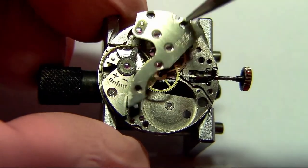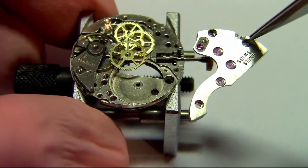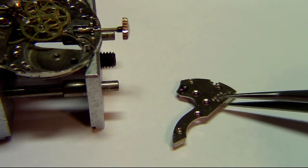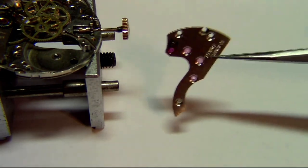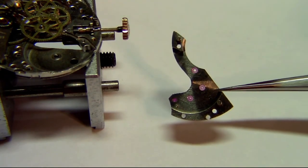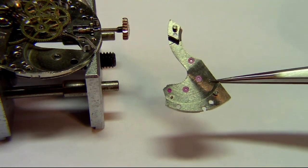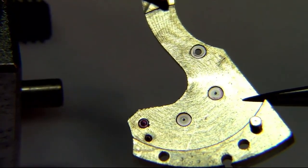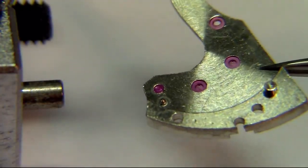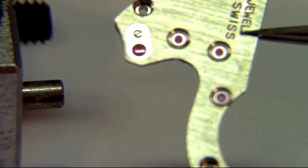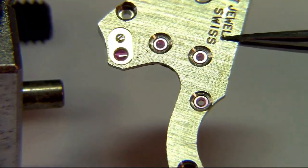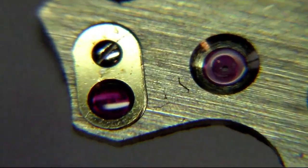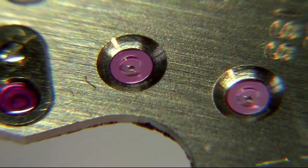Now I'm going to remove the gear train bridge so you can see what's below it. Here is the bridge with its jewels. The jewels work as bearings—they are the supporting points for the ISOs of the gears.